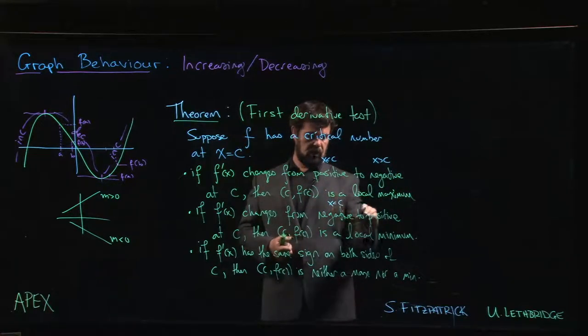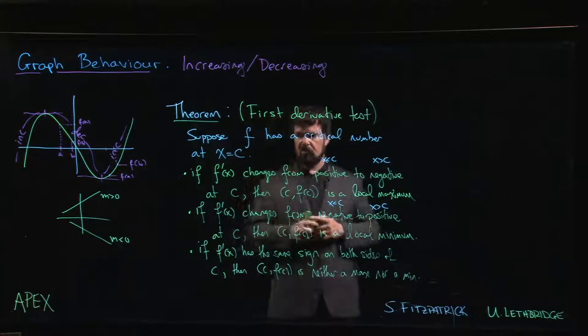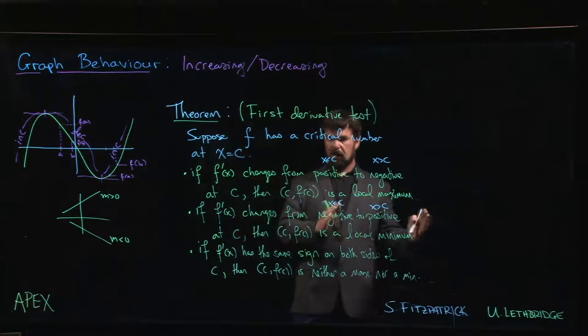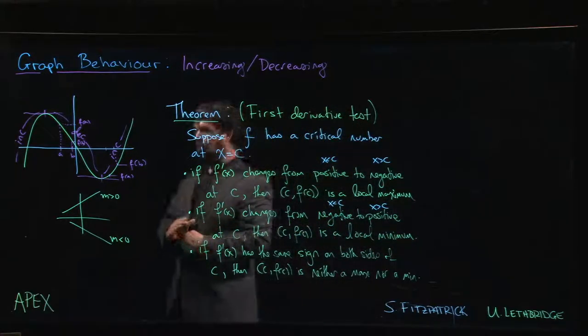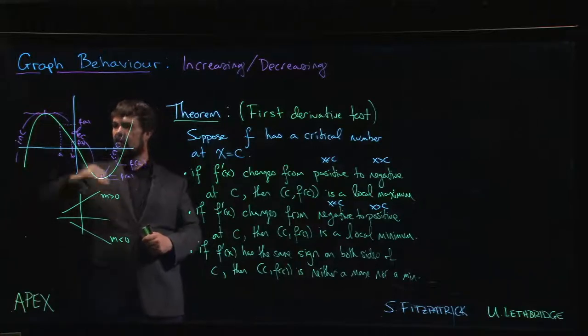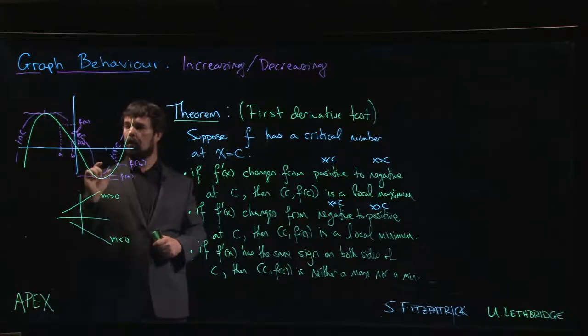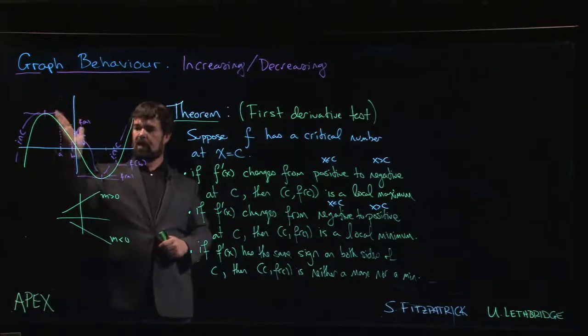If the derivative changes sign from positive to negative at that point, that means we're going from increasing to decreasing, and we have a maximum at that critical point. If we change from negative to positive, we're going from decreasing to increasing, which means we have a minimum.